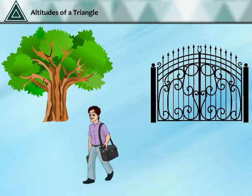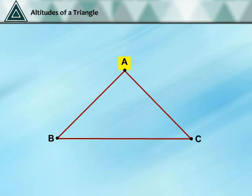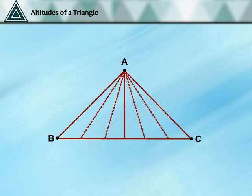Altitudes of a Triangle: in daily life, you might have come across the word height. The height of an object is measured from its top point to its base. For triangle ABC, the height is the distance from vertex A to base BC. There can be many lines from A to BC, but the height is given by the length of the line segment that starts from A and is perpendicular to BC.